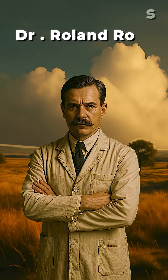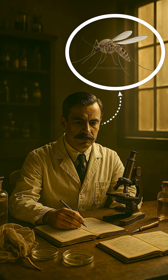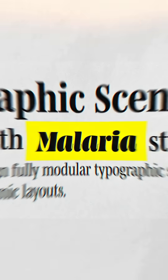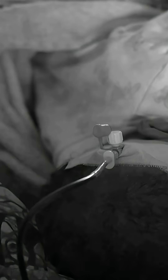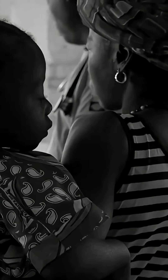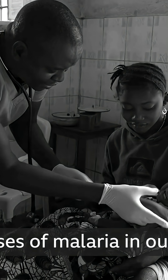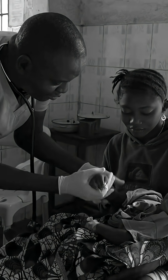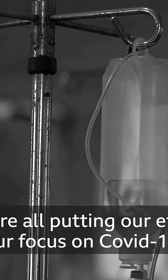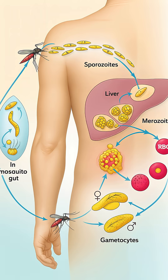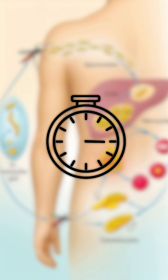In 1897, Sir Ronald Ross discovered something shocking inside a mosquito's stomach — the malaria parasite. That day, the world learned a tiny mosquito carries a deadly life cycle inside it. Let's decode the life cycle of plasmodium in just 90 seconds.